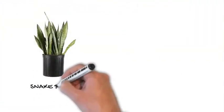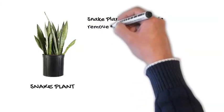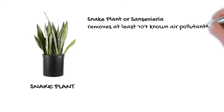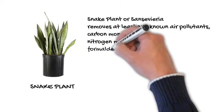Snake plant, or sansevieria, removes at least 107 known air pollutants, including carbon monoxide and nitrogen monoxide, formaldehyde, chloroform, benzene, xylene, and trichloroethylene among many others.